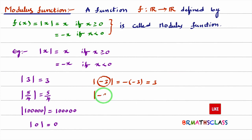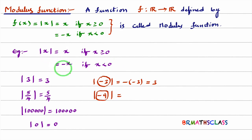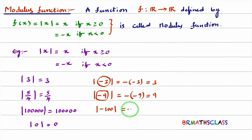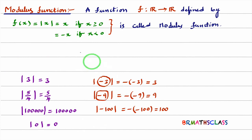Modulus of minus 9: minus 9 is negative, so minus 9 is less than 0. When x is less than 0, modulus of x is minus x. In place of x, minus 9 is there. Minus of minus 9 is plus 9. So modulus of minus 9 is plus 9. Consider that modulus function is a positive machine. If you give a positive number to modulus function, it gives a positive number. If you give a negative number, it makes it positive. Modulus of minus 100 is plus 100, because minus of minus 100 is 100.